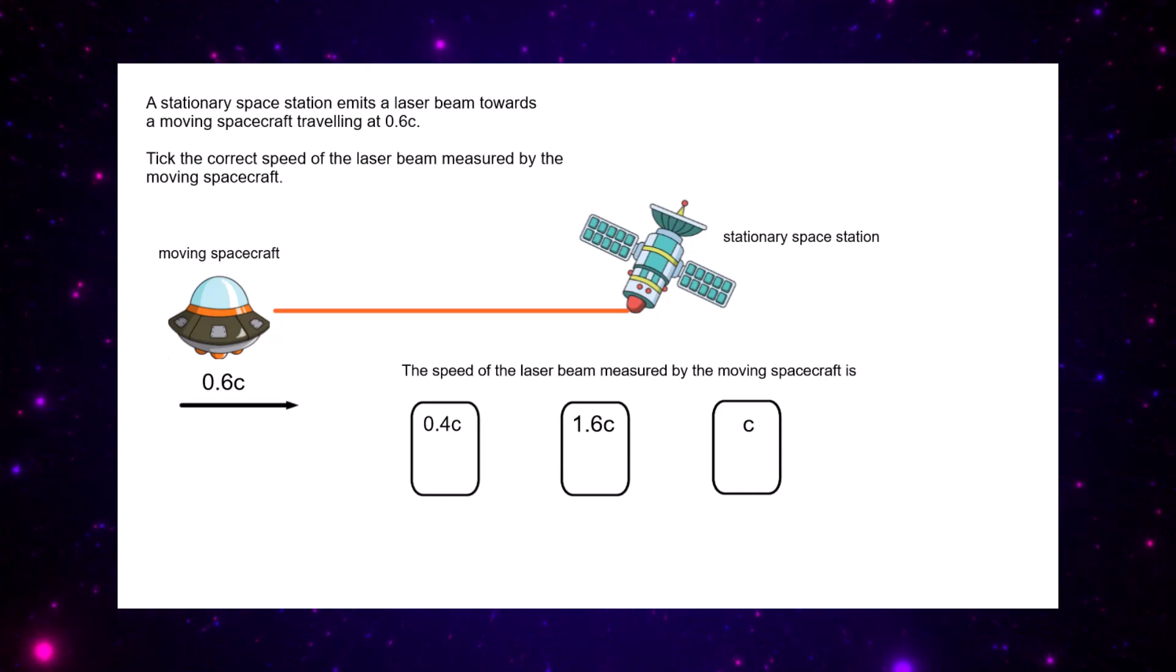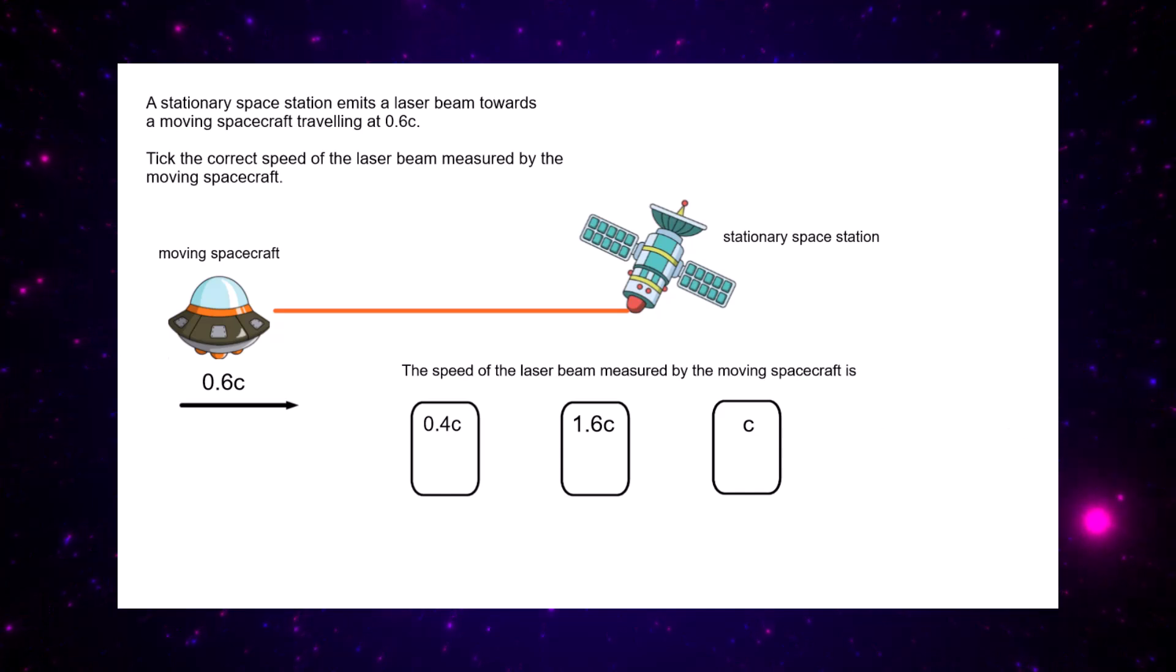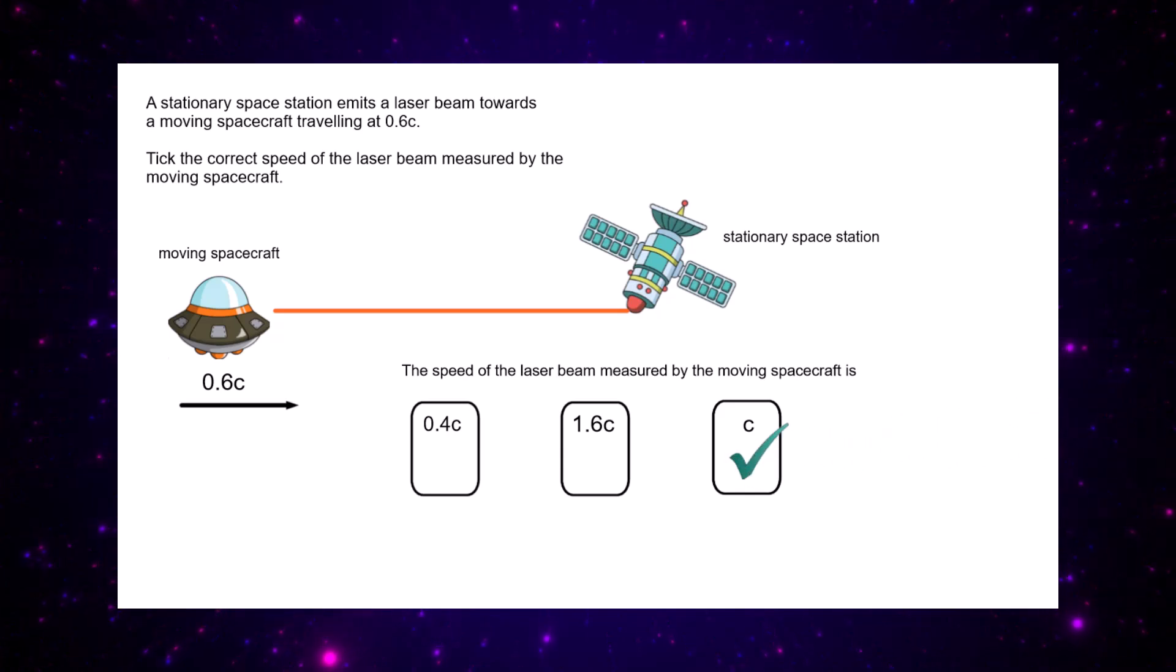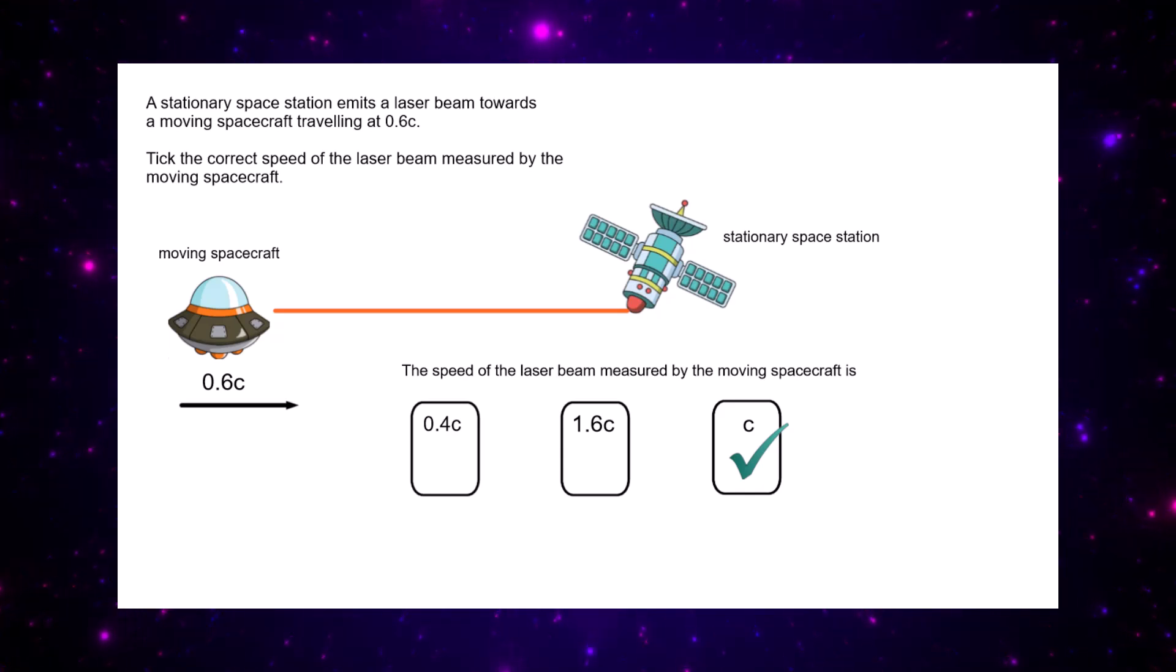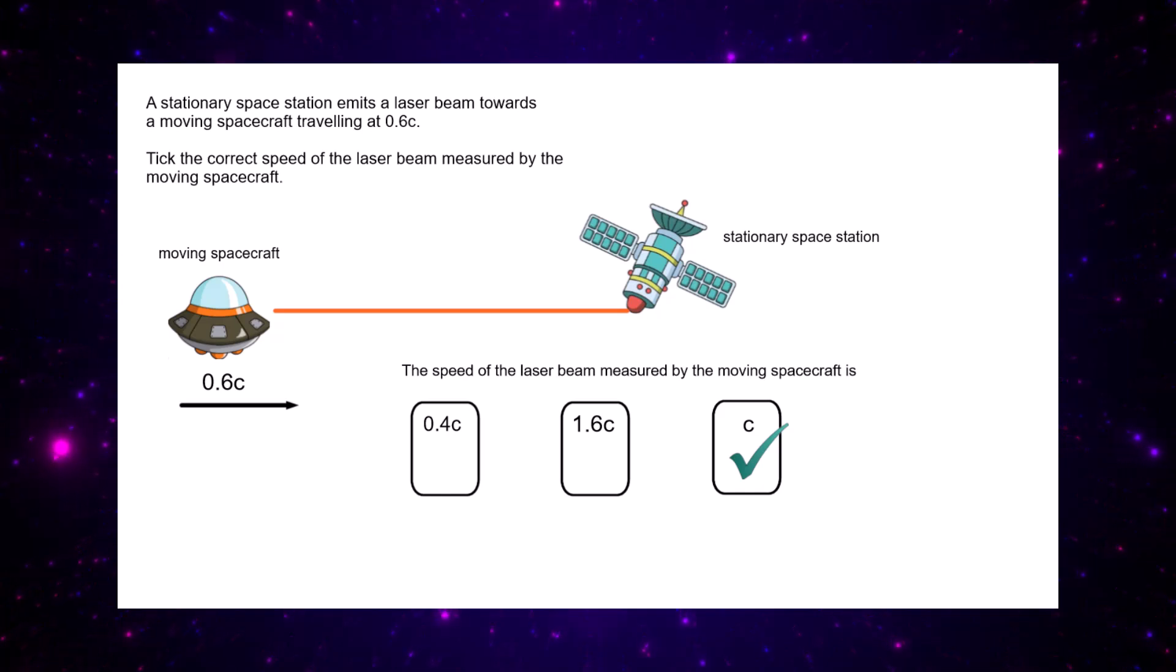But the moving spacecraft will always measure the speed of light to be equal to c. And that's Einstein's famous discovery. No matter how you measure the speed of light, no matter if something's moving towards you or moving away from you, you're going to measure the same speed, c.